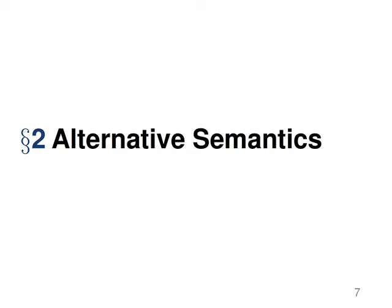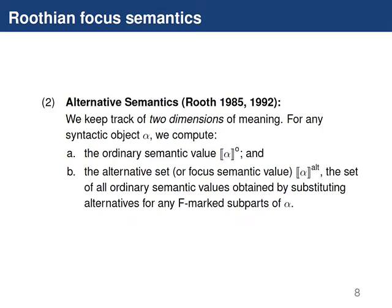Let's start with an opinionated introduction to alternative semantics. Alternative semantics is the framework developed by Mats Rooth in the 80s and 90s for the interpretation of focus. In this framework, we keep track of two dimensions of meaning. For any syntactic object alpha, we compute its ordinary semantic value — that's the regular semantic value we know and love — with a superscript O on the interpretation function. We can also compute an alternative set for that same object alpha, with a superscript ALT, which is roughly the set of all ordinary semantic values you would get if you substituted any focus-marked parts with contextually relevant alternatives.